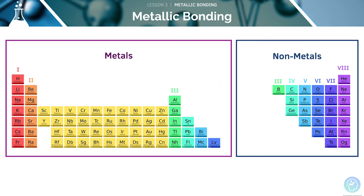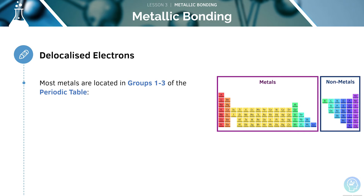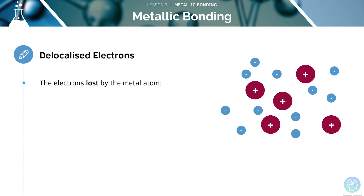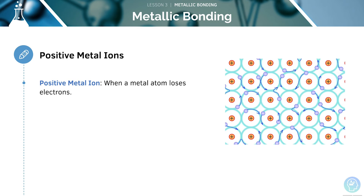This diagram shows the metals and non-metals in the periodic table. Most metals are located in groups 1 to 3 of the periodic table, meaning that they either have 1, 2, or 3 electrons in their outermost shell. Each metal atom loses these electrons to gain a full outer shell, and the electrons become delocalised into a sea of negative charge. A positive metal ion is formed when a metal atom loses electrons — for example, Na+ or Ca2+.